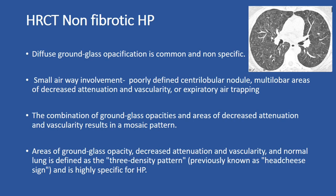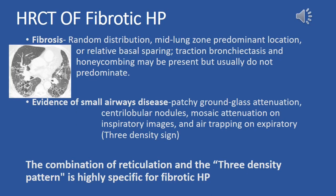The three-density pattern, previously known as the head cheese sign, consists of areas of ground glass opacity, decreased attenuation and vascularity, and normal lung — and is highly specific for hypersensitivity pneumonitis. These HRCT findings, when observed together, can aid in the diagnosis of non-fibrotic hypersensitivity pneumonitis and differentiate it from other interstitial lung diseases.